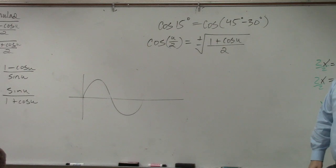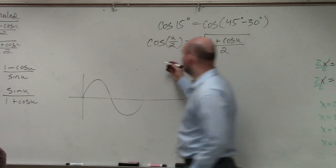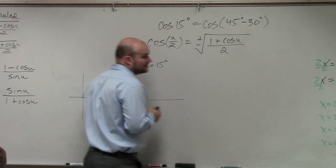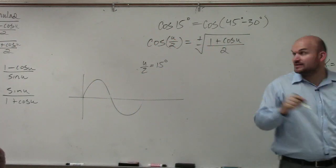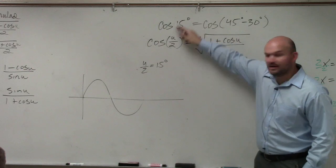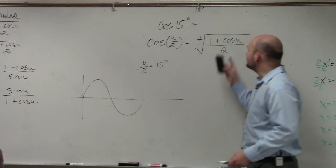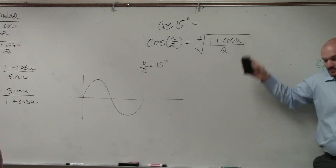So what I'm saying is u over 2 is equal to 15 degrees. Do you guys see how u over 2 is equal to 15? If u over 2 is equal to 15, can we figure out then what to plug in for u? 30.